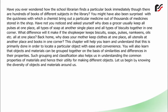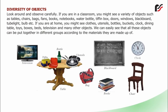Let us begin by knowing the diversity of objects and materials around us. Look around and observe carefully. If you are in a classroom, you might see a variety of objects such as tables, chairs, bags, fans, books, notebooks, water bottle, tiffin box, doors, windows, blackboard, tube light, bulb, etc.